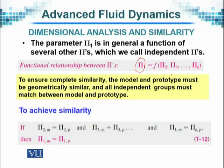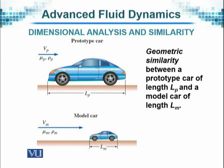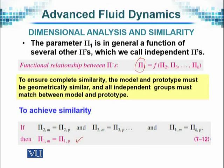To ensure complete similarity, the model and prototype must be geometrically similar, and all independent groups must match between model and prototype. When we talk about the group, we are referring to those numbers that I mentioned, the Reynolds number, the Froude number, and whichever is relevant. So if Pi 2 of the model is equal to Pi 2 of the prototype, and so on, then Pi 1 of the model will be equal to Pi 1 of the prototype. This is the rule that is required for similarity.